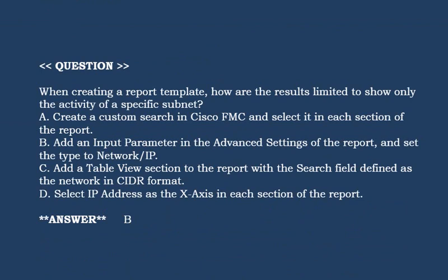Next question: When creating a report template, how are the results limited to show only the activity of a specific subnet? Option A: Create a custom search in Cisco FMC and select it in each section of the report. Option B: Add an input parameter in the advanced settings of the report and set the type to network IP. Option C: Add a table view section to the report with the search field defined as the network in CIDR format. Option D: Select IP address as the x-axis in each section of the report. Correct answer is Option B.